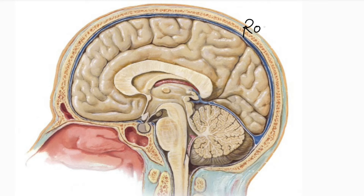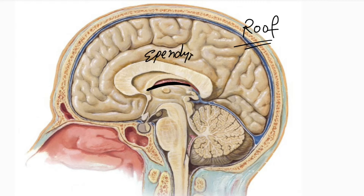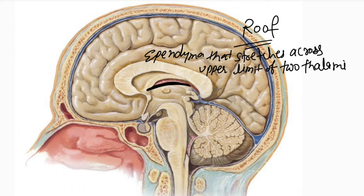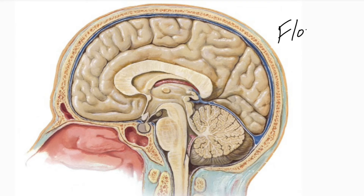Next is the roof. The thalamus is present on either side, and the roof is formed by the ependyma that stretches across the upper limits of the two thalami. This is the roof of the third ventricle.